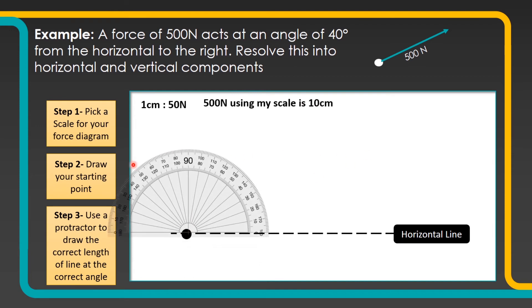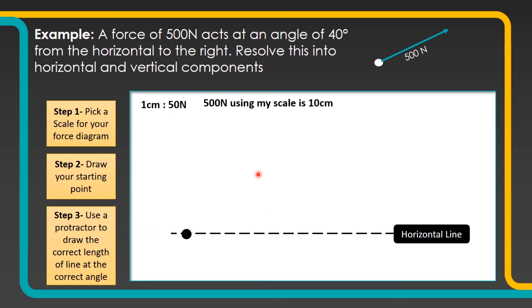I put my protractor on, mark my 40 degree angle with a little dot so I know where to draw my line. Then I'm going to do a 10 centimetre line going up through 40 degrees representing my force.